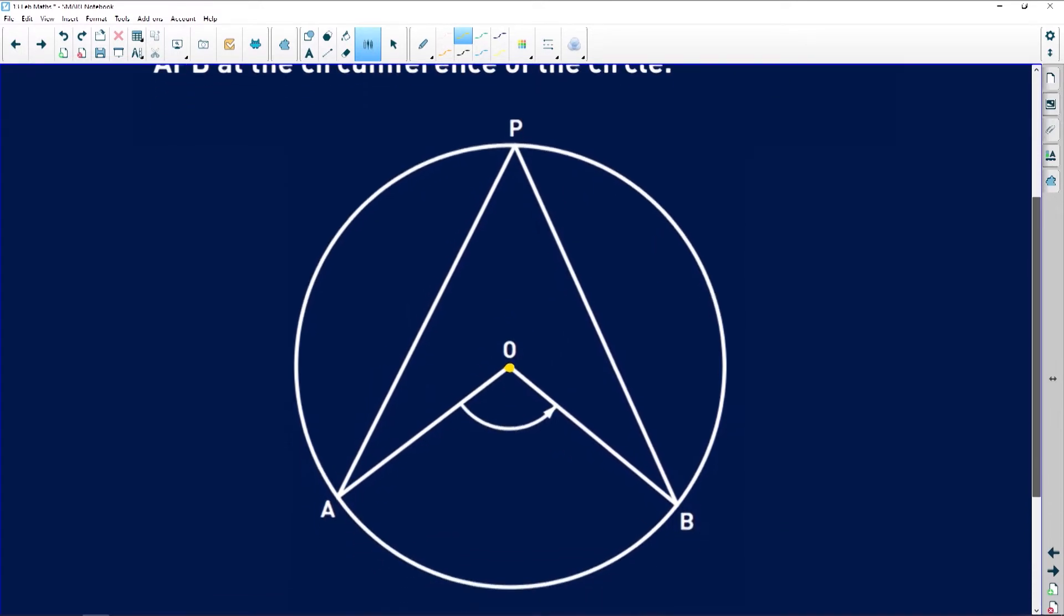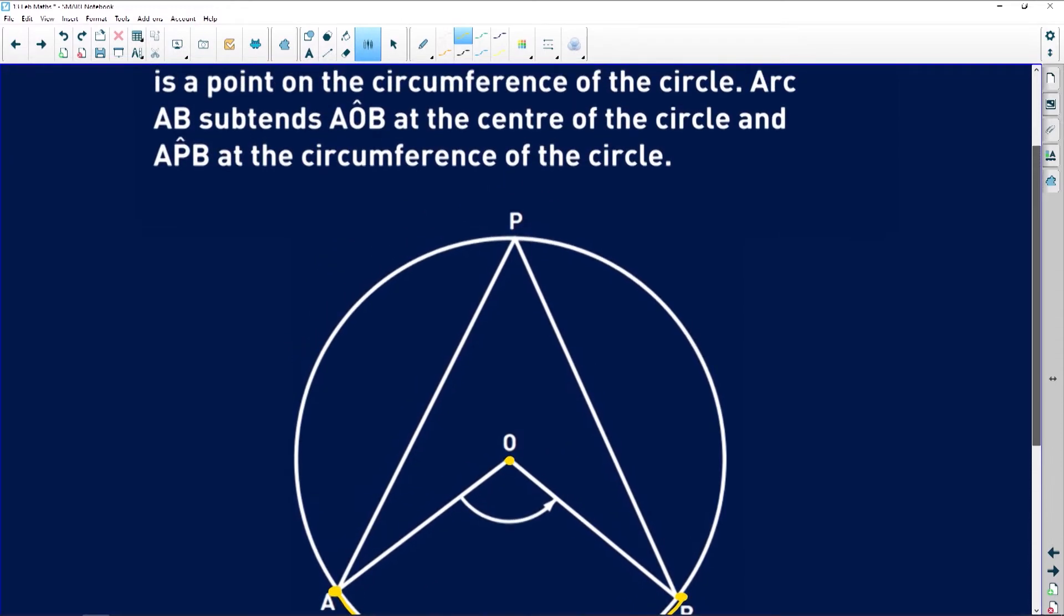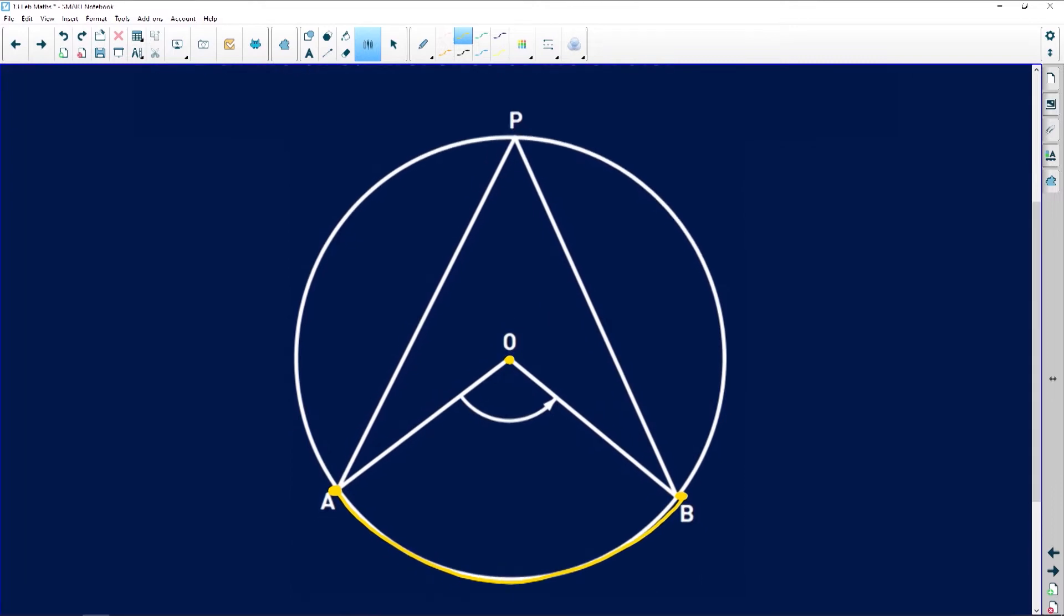Arc AB, that's this thing over here. It's basically saying that there is a part of the circumference joined by A and B subtends angle AOB at the center of the circle and APB at the circumference of the circle.